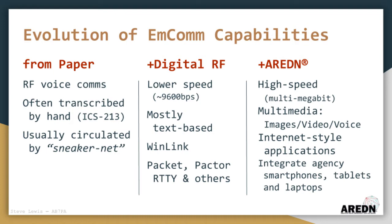It might be useful to look at the evolution of MCOM capabilities used by amateur radio operators through the years. Traditionally, we've used RF voice communication on a variety of radio bands. A typical message passing scenario involved giving the message to a radio operator who would write or type it onto a standard ICS-213 form.